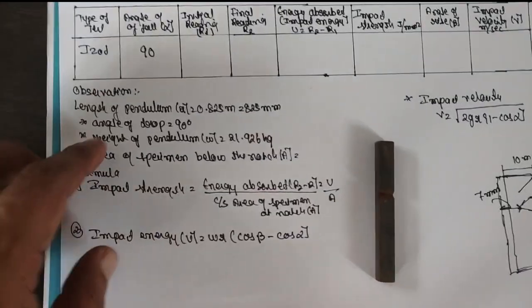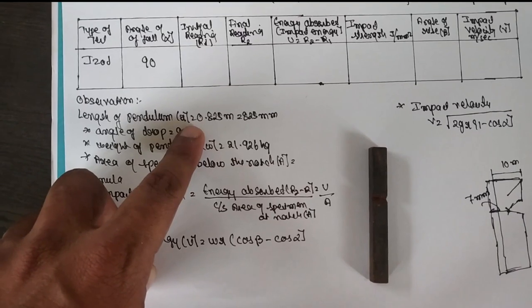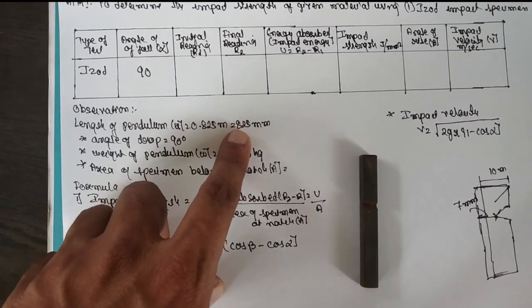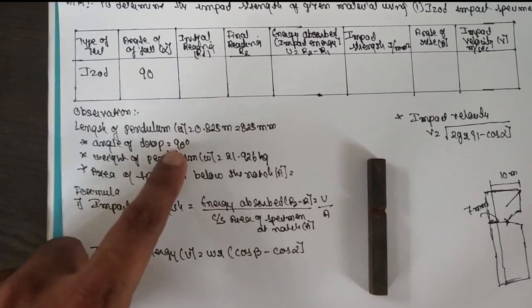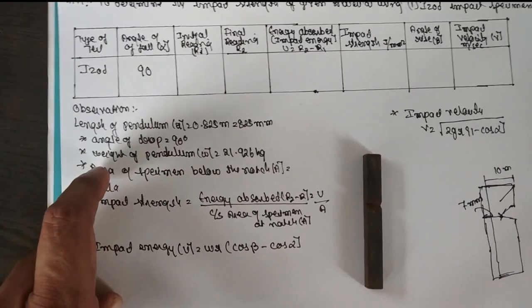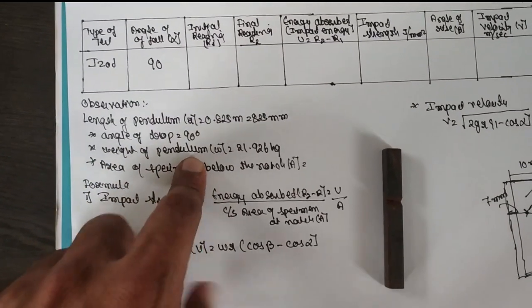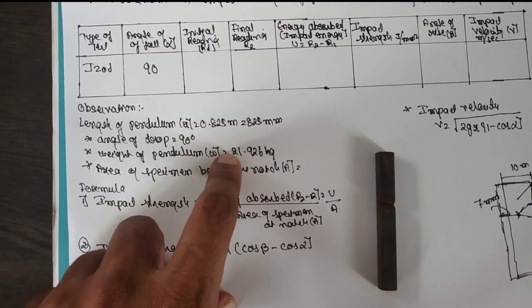The observation contains the length of the pendulum at 0.825 meters. In terms of millimeters, it is 825 mm. Angle of drop is 90 degrees because it is IZOD. In case of Charpy, it should be 140. The weight of the pendulum is 21.926 kg.